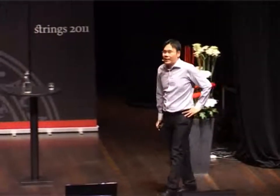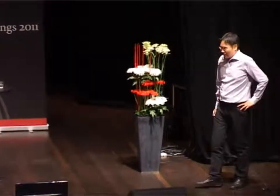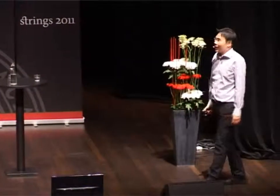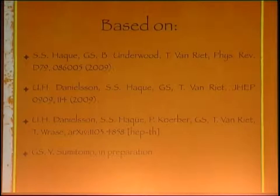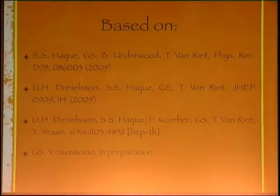I would like to first thank the organizers for the invitation to speak here and for putting together this very nice conference. In this talk I will report on some attempts in finding simple de Sitter vacua, in a sense that I would define shortly. Much of what I'm going to say is based on three papers: first with Shaji Haq and Brad Underwood, former students at Wisconsin, and Thomas Van Riet who is now here in Uppsala. As the project evolved, we joined forces with Ulf Danielson, Paul Kerber, and Tim Rice. I will also mention some ongoing work in a much more preliminary stage with Yosuke Sumitomo.